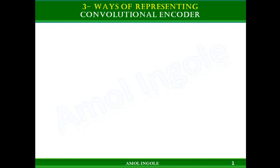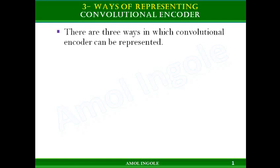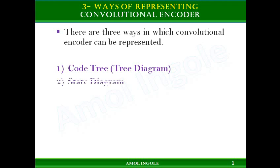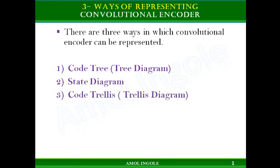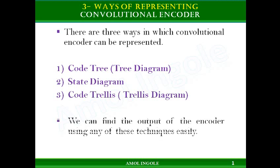Hello students, this is Amur Ingole and in this video I am going to explain tree diagram, also called as code tree. There are three ways in which a convolutional encoder can be represented: the code tree (tree diagram), the state diagram, and the code trellis (trellis diagram). We can find the output of the encoder by using any of these techniques easily.